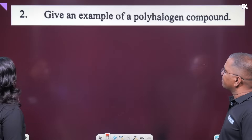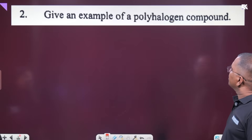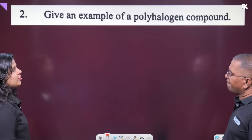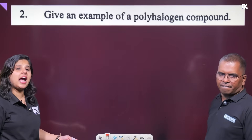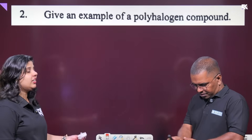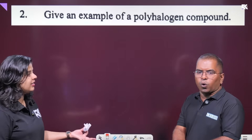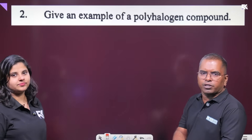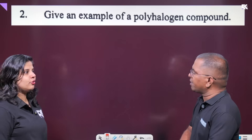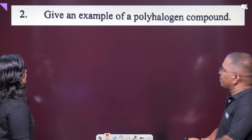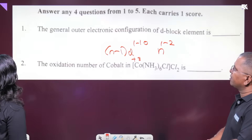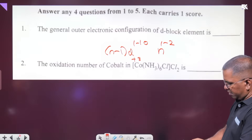Give an example of a polyhalogen compound. Polyhalogen compound — chloroform is a polyhalogen compound. CCl₄ is also an example. Next one.